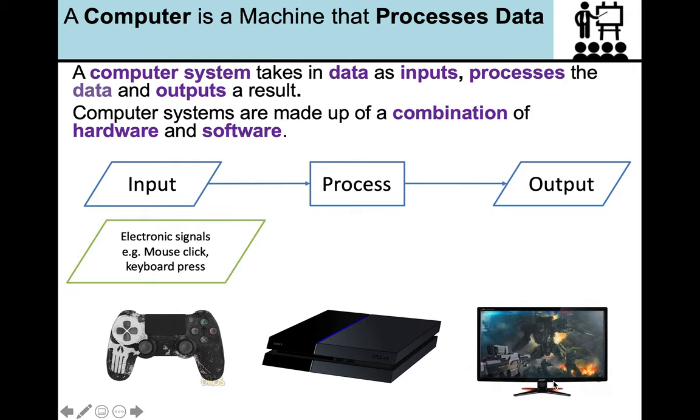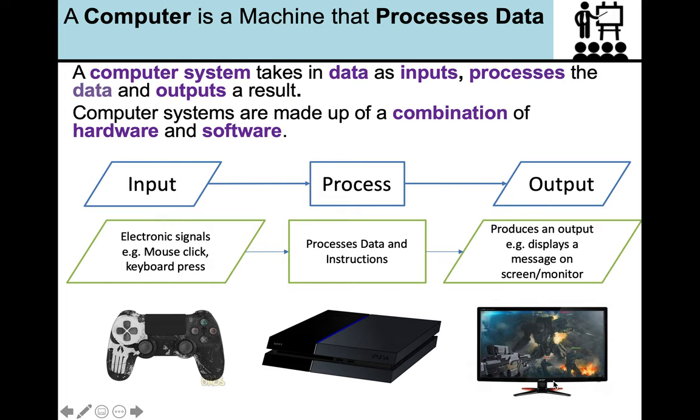So an input could be an electronic signal, for example a mouse click or a keyboard press, or you bashing buttons on your playstation control. And the process is that data and instructions inside your computer system that are lots of calculations and comparisons that are happening. And the end result is an output that is potentially displayed on your monitor like really awesome graphics in a video game.